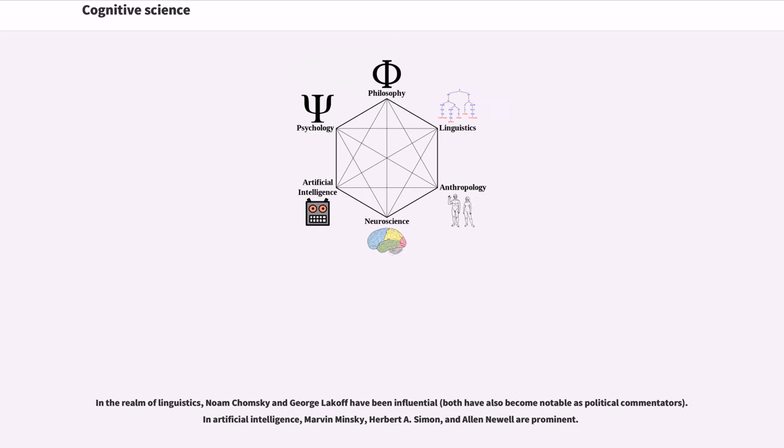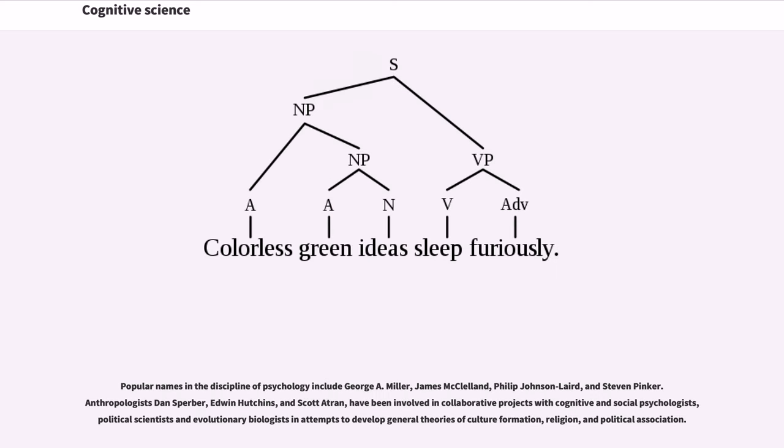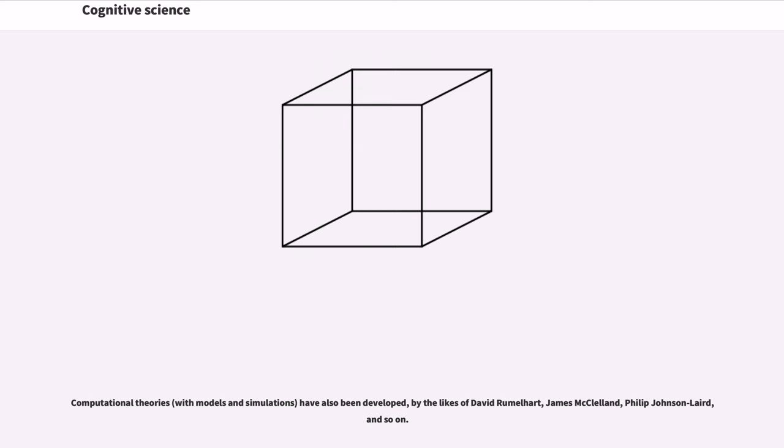In the realm of linguistics, Noam Chomsky and George Lakoff have been influential, both have also become notable as political commentators. In artificial intelligence, Marvin Minsky, Herbert A. Simon, and Alan Newell are prominent. Popular names in the discipline of psychology include George A. Miller, James McClelland, Philip Johnson-Laird, and Steven Pinker. Anthropologists Dan Sperber, Edwin Hutchins, and Scott Atran, have been involved in collaborative projects with cognitive and social psychologists, political scientists and evolutionary biologists in attempts to develop general theories of culture formation, religion, and political association. Computational theories, with models and simulations, have also been developed, by the likes of David Rumelhart, James McClelland, Philip Johnson-Laird, and so on. Other contributions have been made by Marvin Minsky and Noam Chomsky.